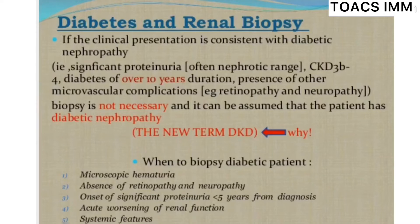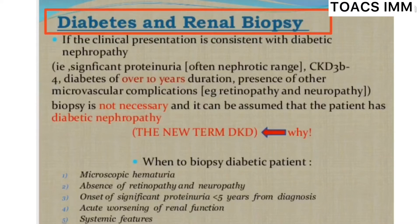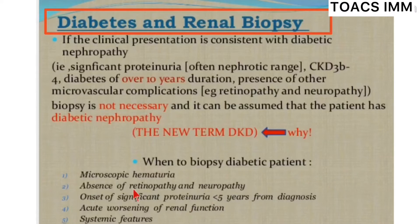Regarding diabetes and renal biopsy — when to do biopsy in diabetic patients: when there is microscopic hematuria, absence of retinopathy and neuropathy, onset of significant proteinuria less than five years from diagnosis, acute worsening of renal function, and systemic features. These are the most common indications of renal biopsy in diabetic patients.